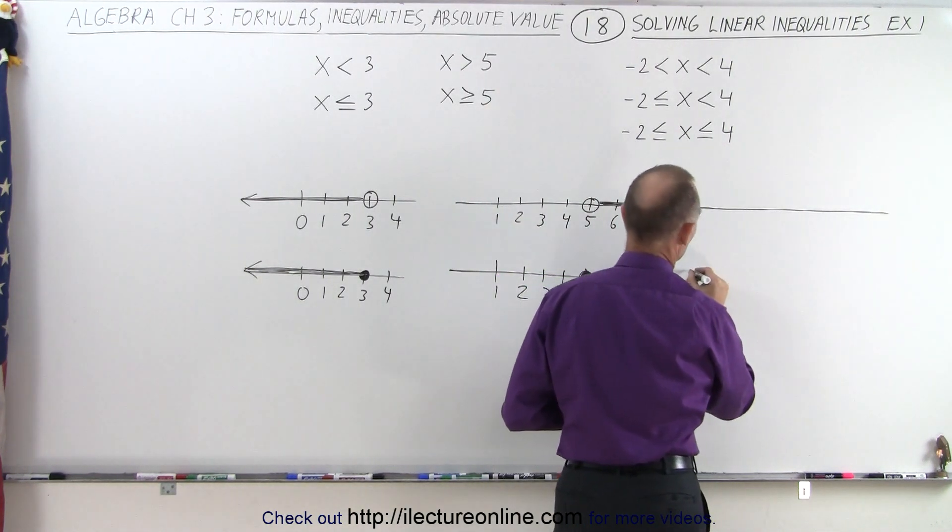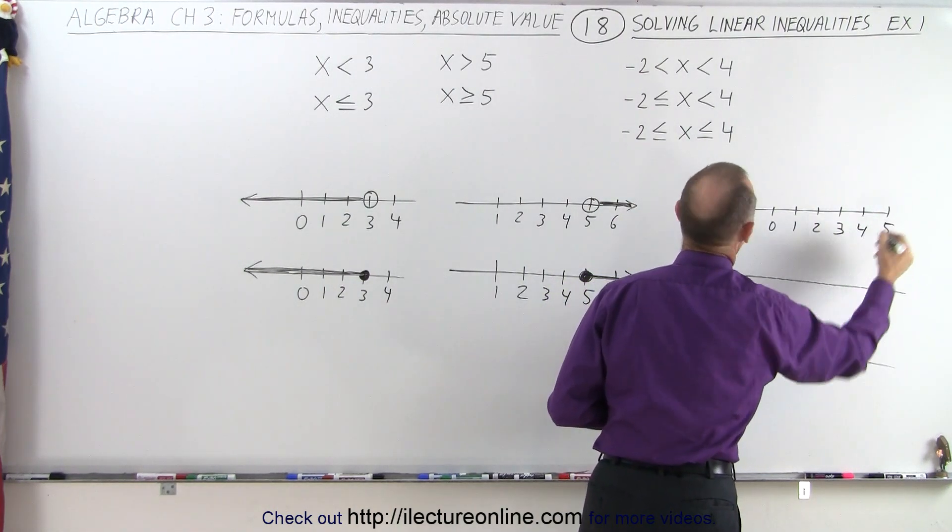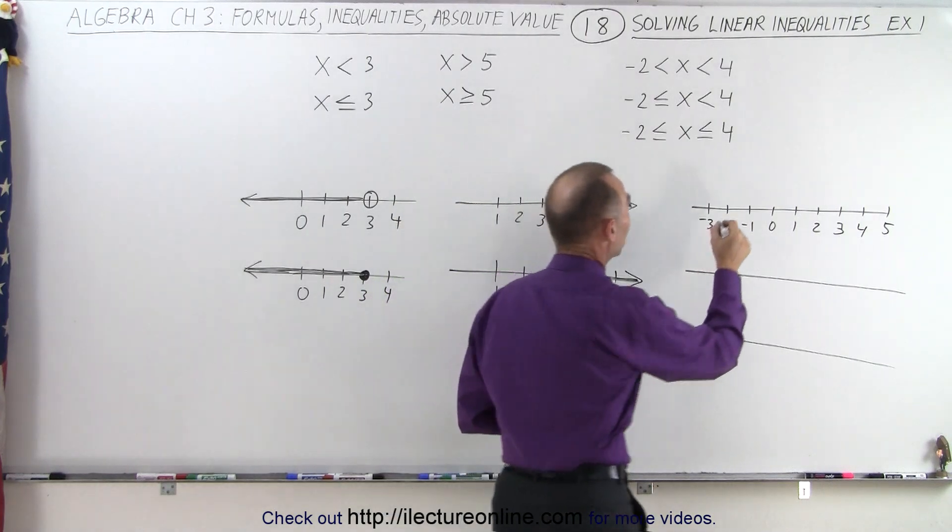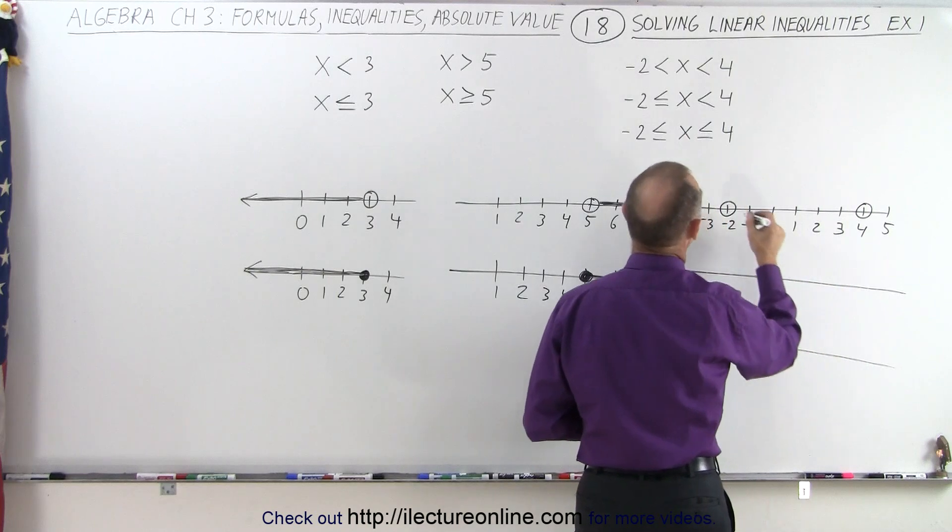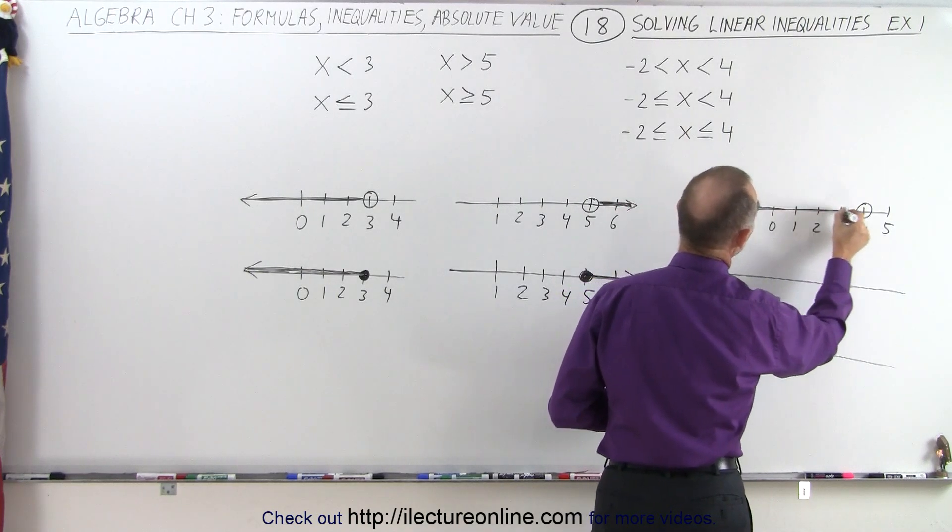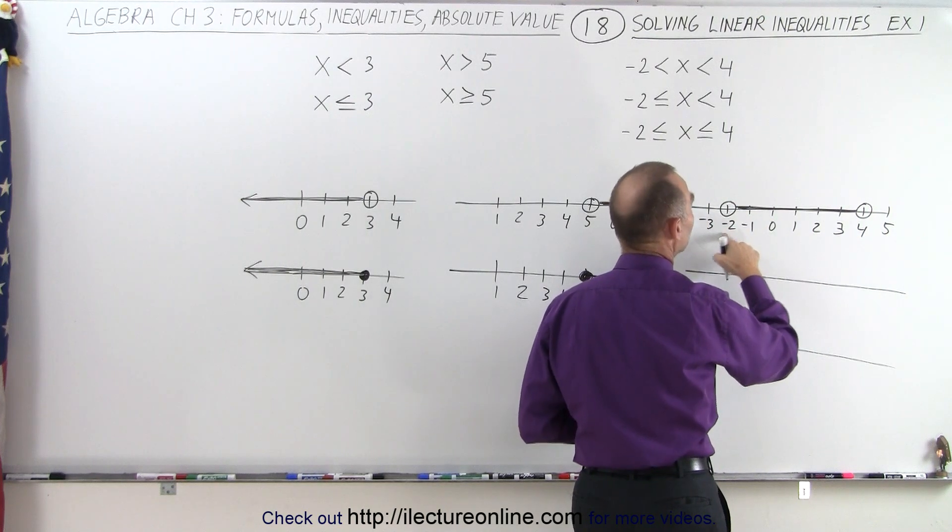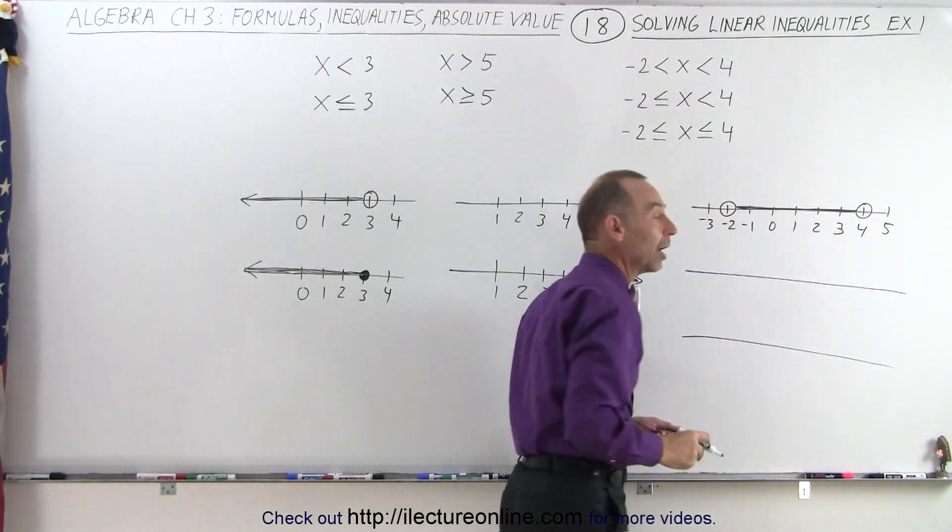Let's draw three number lines. Notice that in the first example, we do not include the endpoints, so we draw a hollow circle at negative 2 and a hollow circle at positive 4, with all the numbers in between. This is the range of numbers that are greater than negative 2, smaller than 4, but not including the endpoints indicated by the hollow circles.